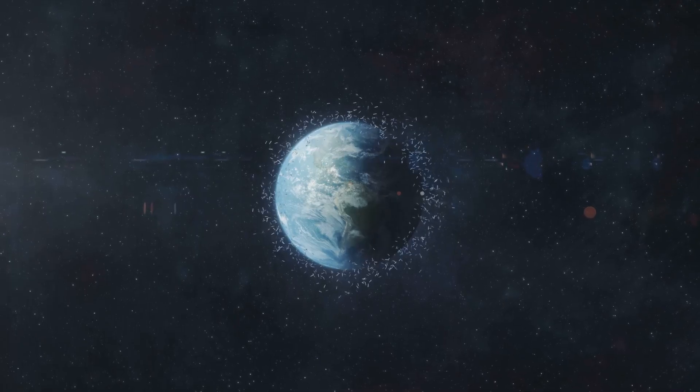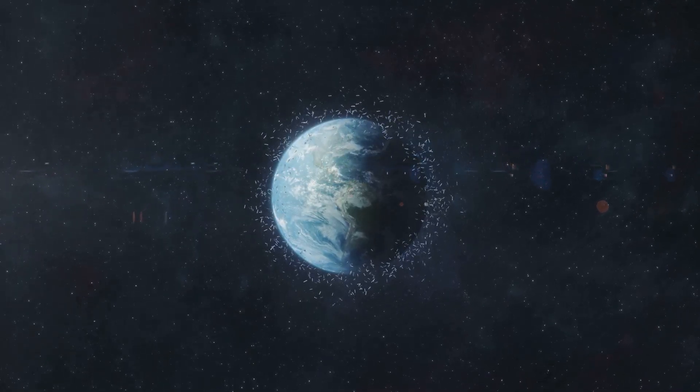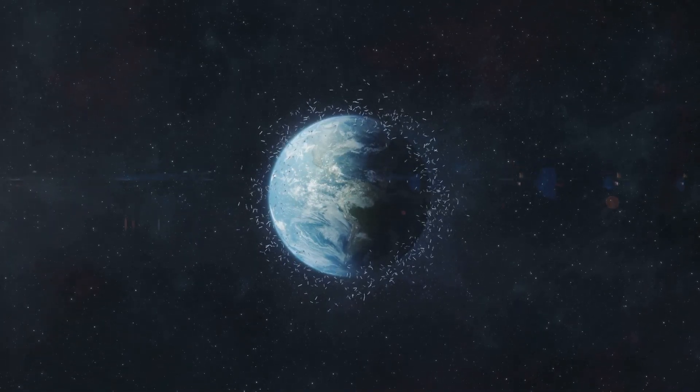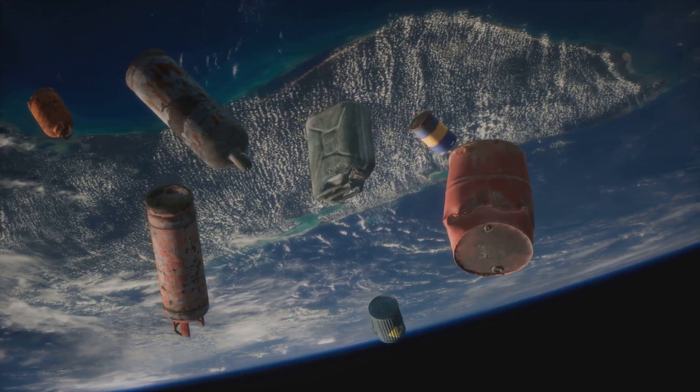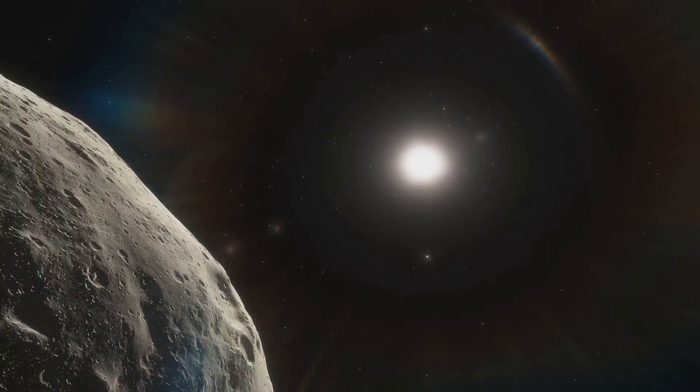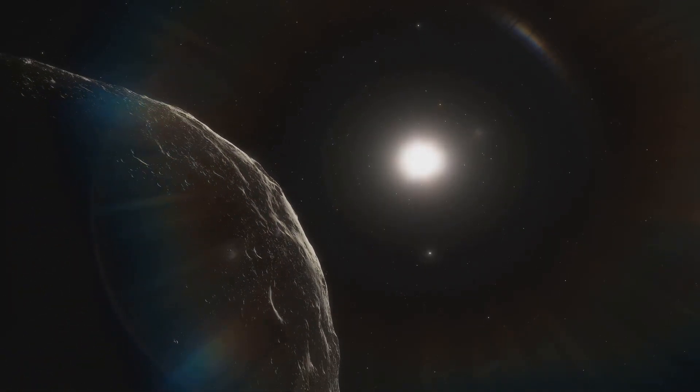Debris from this collision, a mixture of molten rock and vaporized material, was flung into orbit around Earth. Over time, this orbiting debris coalesced under its own gravity. It cooled and solidified, eventually forming our Moon.